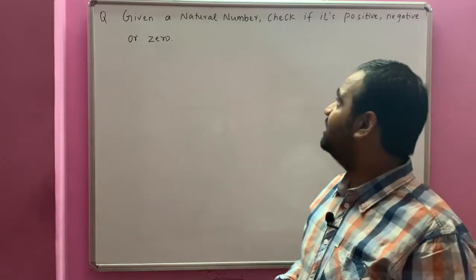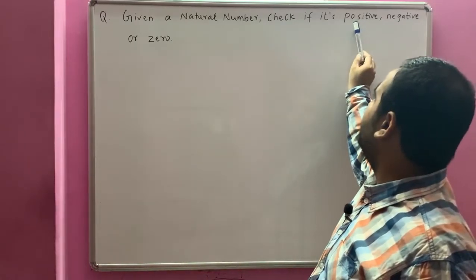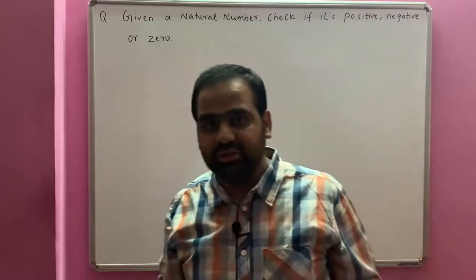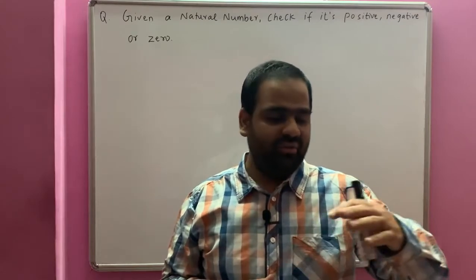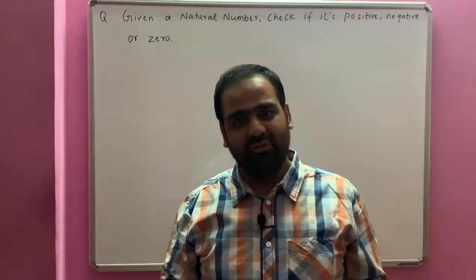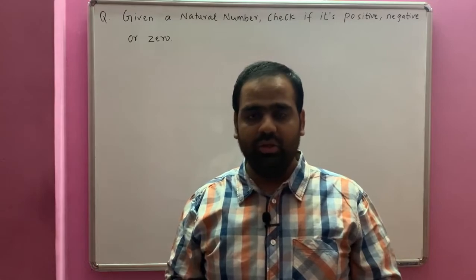Please see over here there are three possibilities. Either it is positive or it is negative or it is zero. That means out of three it can be any one. Now whenever we have more conditions and we need to select one out of it, we will use LC ladder.